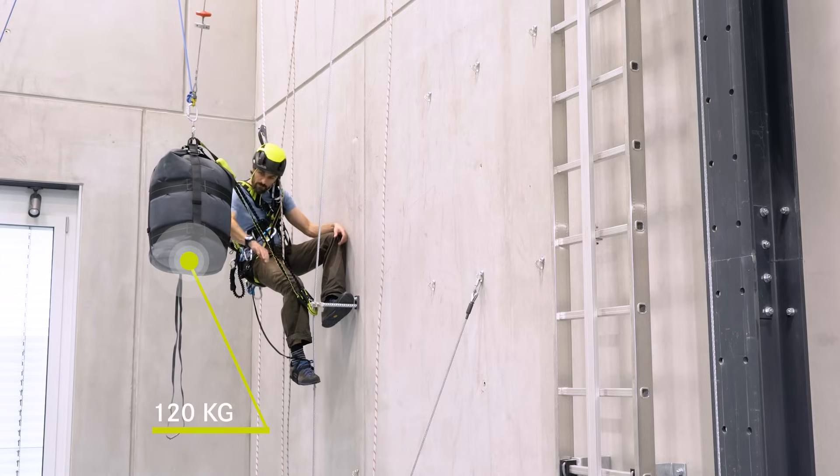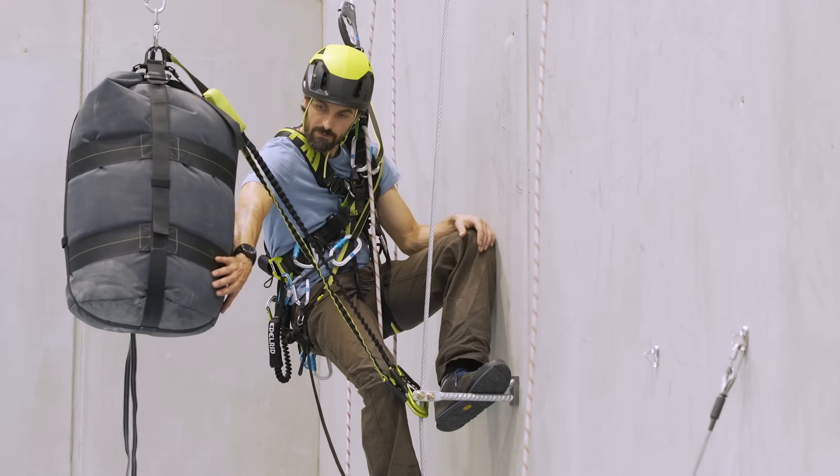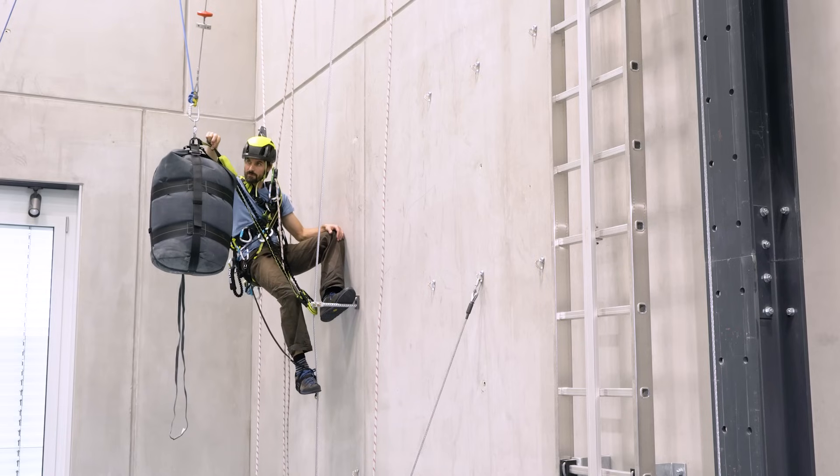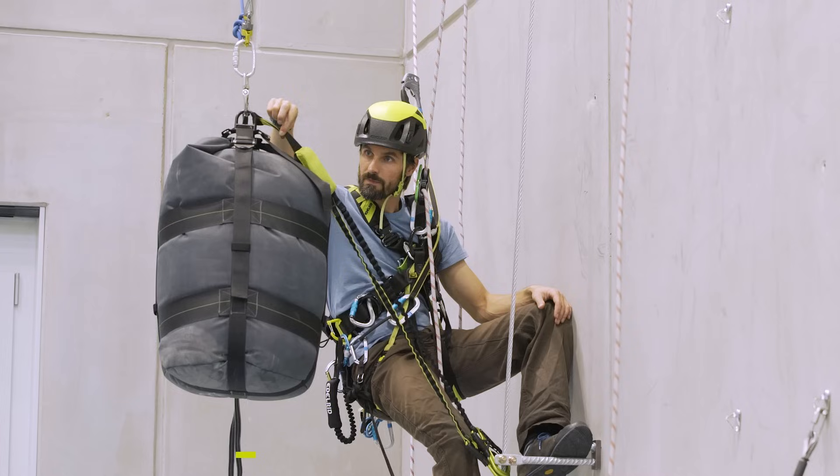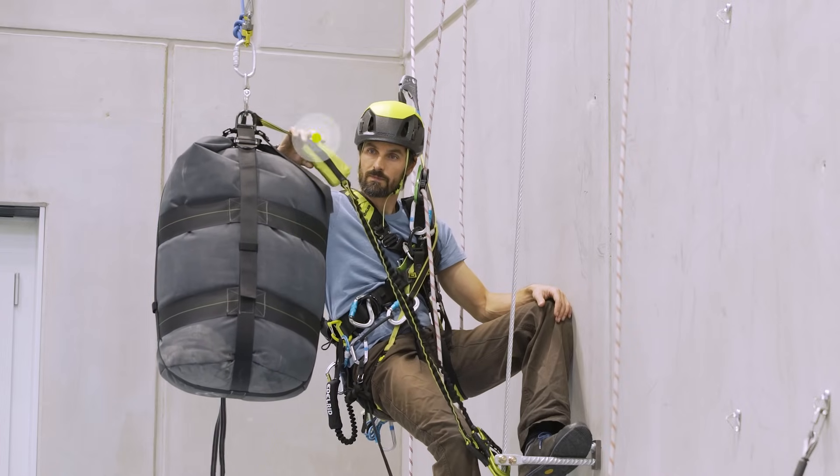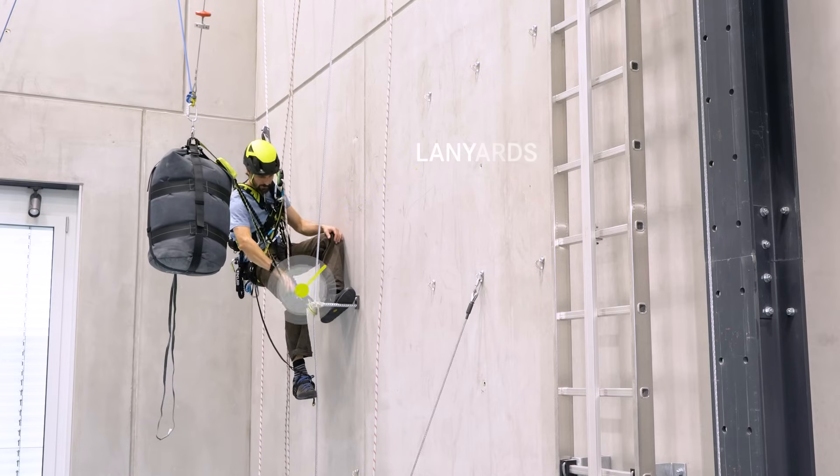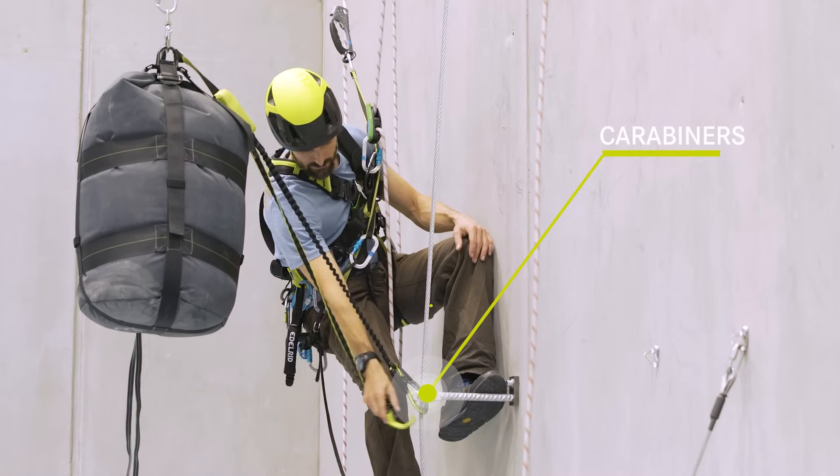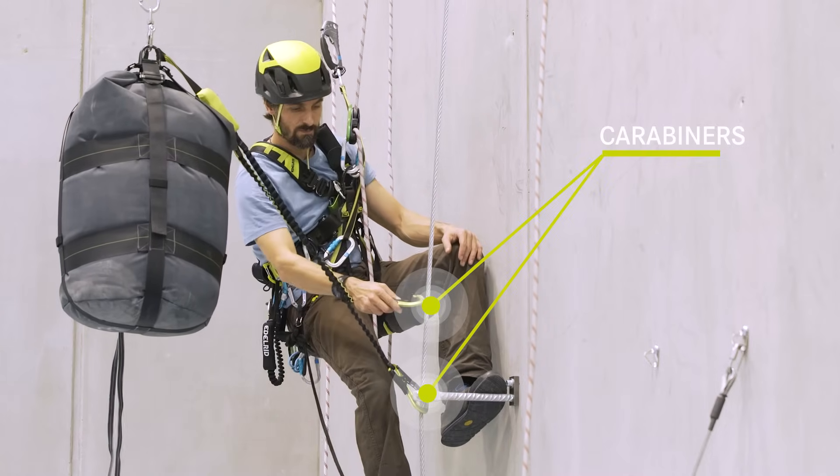This is the falling mass of 120 kilograms which simulates the Vierverrater climber. Here is the Vierverrater set tied in. This is the shock absorber which absorbs the force of the fall. These are the lanyards and these are the carabiners which are clipped in the steel cable of the Vierverrater.